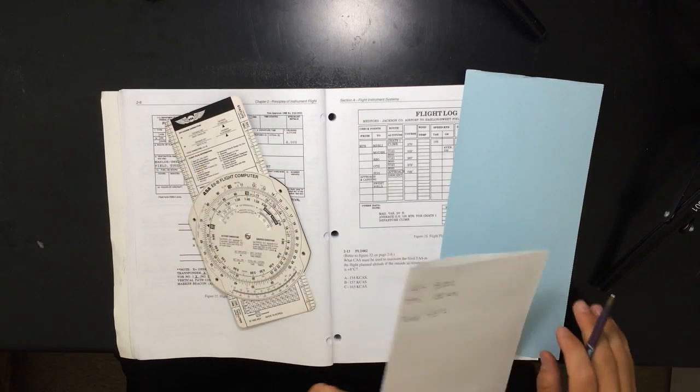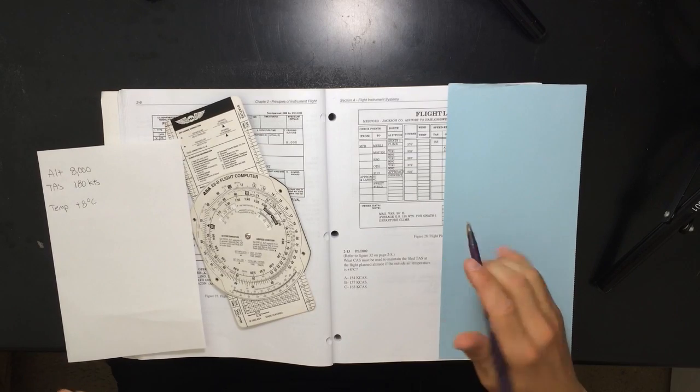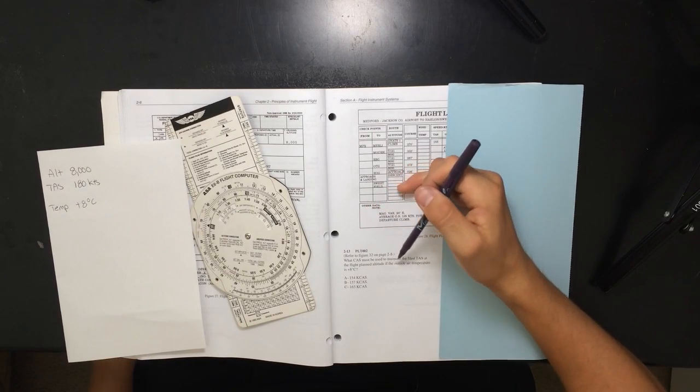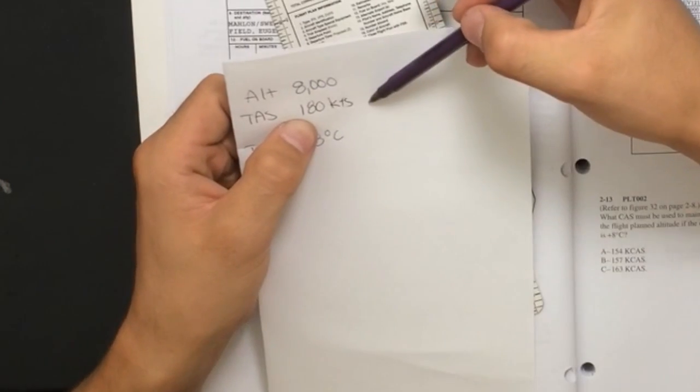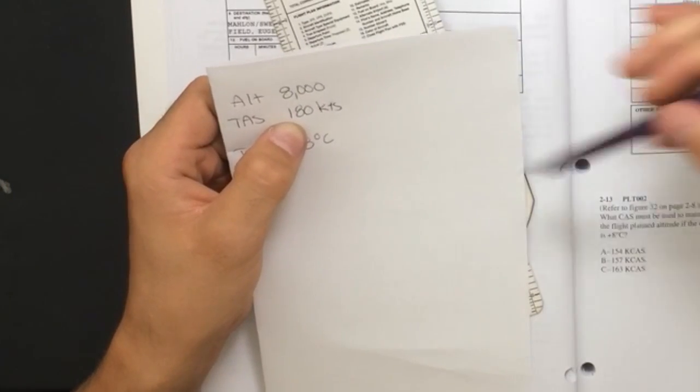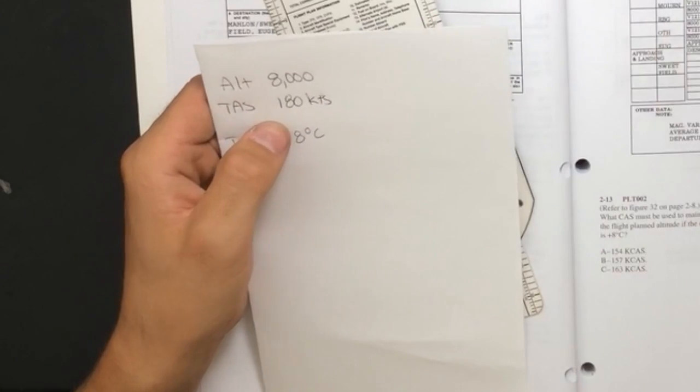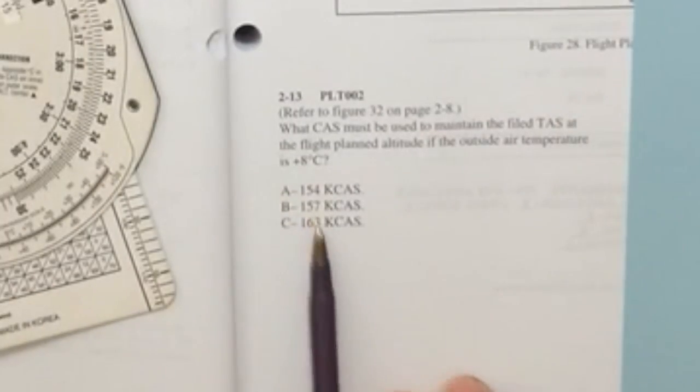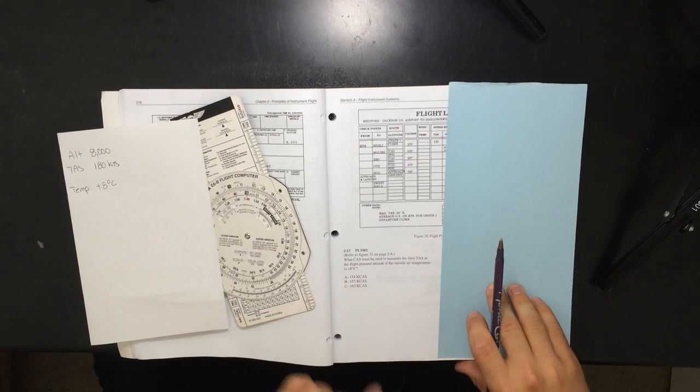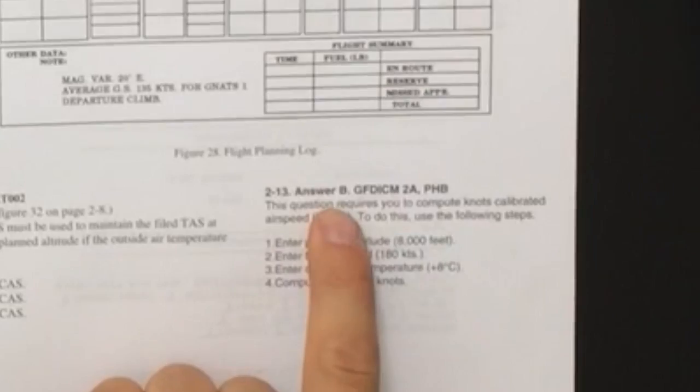And let's go ahead and make sure our answer is correct here. So what calibrated airspeed must be used to maintain the filed true airspeed of 180 knots at the flight planned altitude, which is 8,000 feet, if the outside air temperature is plus 8 degrees Celsius? The answer would be B, 157. So we'll go over here. The answer is B.